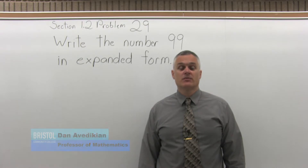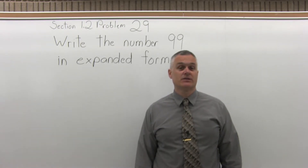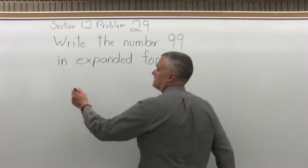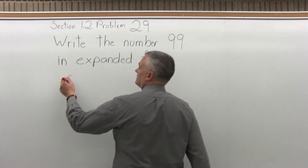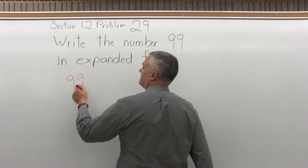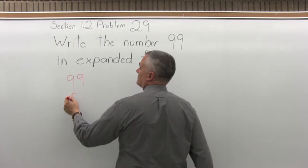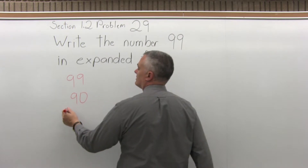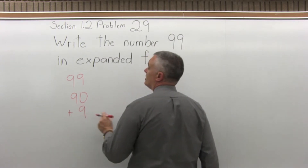It says write the number 99 in expanded form. So 99 in expanded form would be 90 plus 9. And that's all.